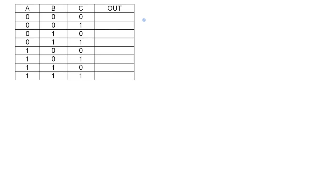Let's start off by looking at a generic example. We have a three-input truth table. For 000 the output is 0, for 001 the output is 1, for 010 the output is 0, for 011 the output is 1, and for 100 the output is 0. For 101 we don't care what the output is — we can represent that with an X. For 110 the output is 0, and for 111 we also don't care, so again we designate it with an X.